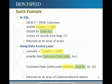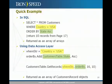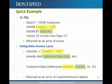For example, if you want to query: SELECT * FROM Customers WHERE Country = 'US' ORDER BY State ASC, and return only ten records from page 17 (records 170 through 179), using the data access layer generated by IRM Speed Designer you would call CustomersTable.GetRecords, specify a where string, specify an order by clause, and give the page number zero-based (so 16) and the number of records (10). That's how easy it is to call a function and use the data access layer to get records from the database.